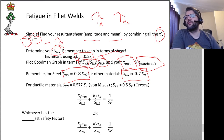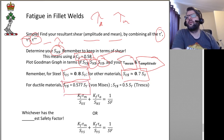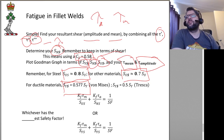For ductile materials, we're looking at 0.577 SY, which gives us our yield in shear using the von Mises criterion. If you want to be a bit more conservative, you can use 0.5 SY for the Tresca criterion.